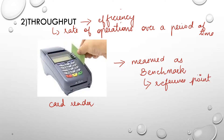So we have studied two characteristics. First is response, which means quickness. Second is throughput, which means efficiency. Now let us look into the third characteristic — reliability.